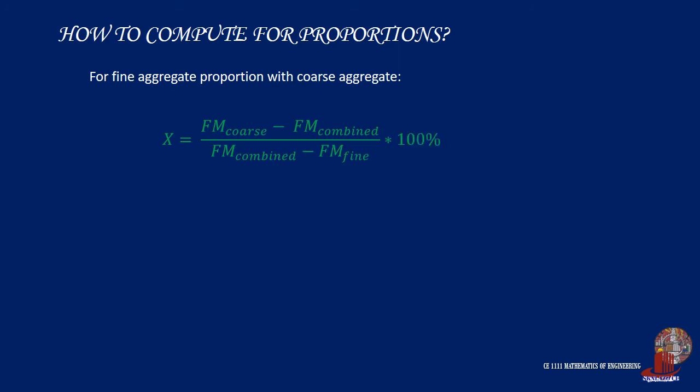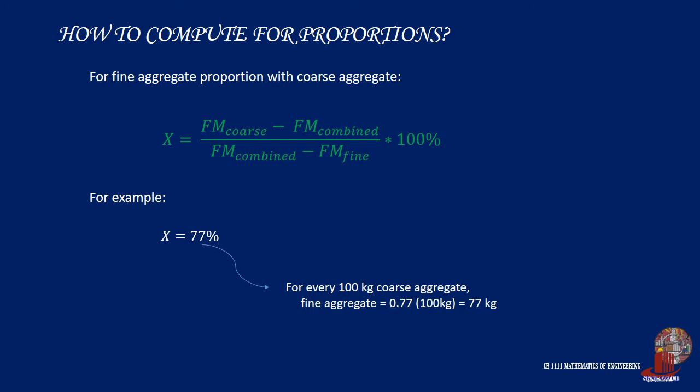The percentage result will identify the proportion of sand. For example, if the computed value for x — the percent of sand — is 77%, it means that for every 100 kg of coarse aggregate, the required fine aggregate is 77 kg.